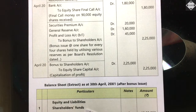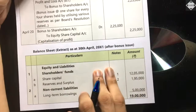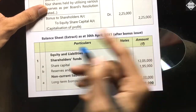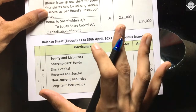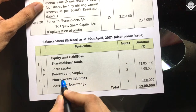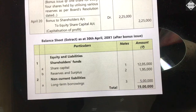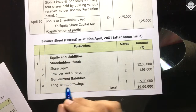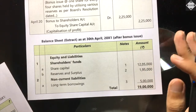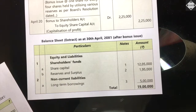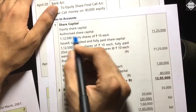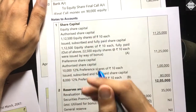Now let's prepare the balance sheet extract as at 30th April 2021, after the bonus issue. Format: Equity and Liabilities — Shareholder Funds: Share Capital (Note 1), Reserves and Surplus (Note 2). Non-Current Liabilities: Long-Term Borrowings — 12% Debentures (Note 3). In the Notes to Accounts, first take Equity Share Capital. There is an adjustment to authorized share capital — we need to increase it.